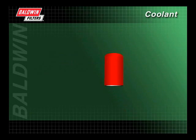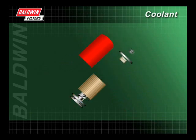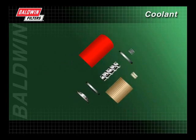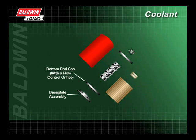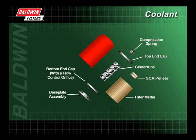To better understand how a coolant filter works, let's look at the components of a typical spin-on coolant filter with chemicals. The primary components are a base plate assembly, a bottom end cap with a flow control orifice, a center tube, the filter media, SCA pellets, a top end cap, a compression spring, and the canister.